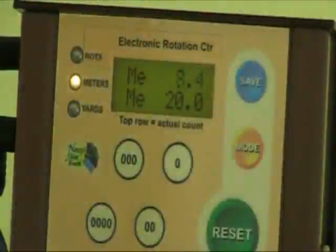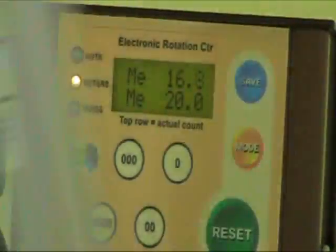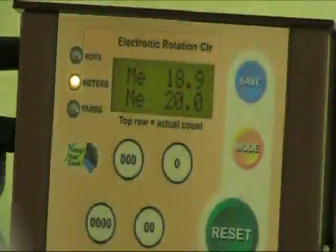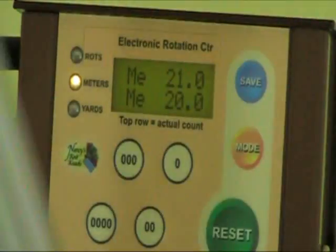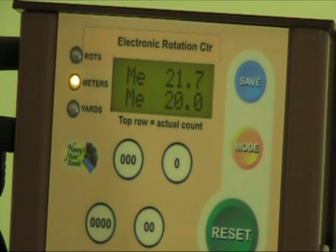So you're able to set meters, yards, rotations. You can key in the exact measurement around the circumference. We even give you a 10 foot tape measure to do that. And that's the most sophisticated yardage counter on the market.